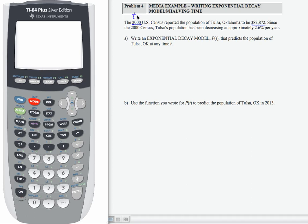So 2000 then is our starting year. Since that time, the population has been decreasing at approximately 2.6% per year. 2.6 is 0.026 as a decimal.